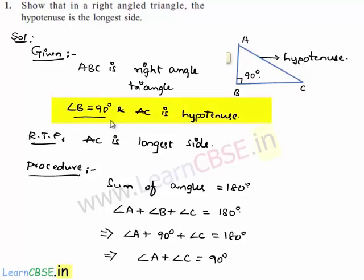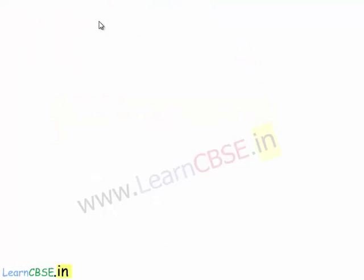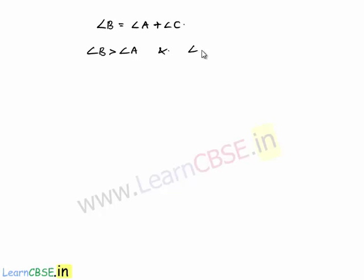Since we have that angle B is equal to 90 degrees, and angle A plus angle C is equal to 90 degrees, we get the statement that angle B is equal to angle A plus angle C. Therefore, angle B is always greater than angle A, and angle B is also always greater than angle C.